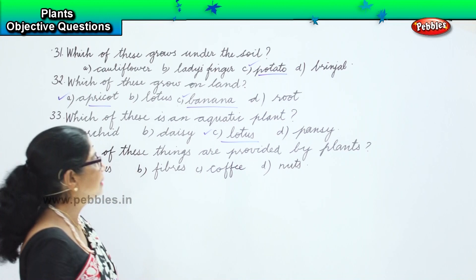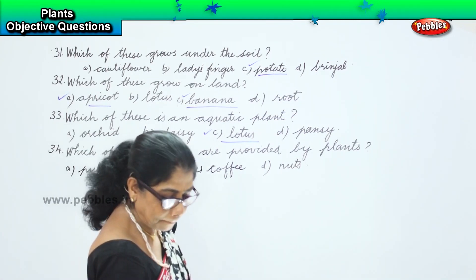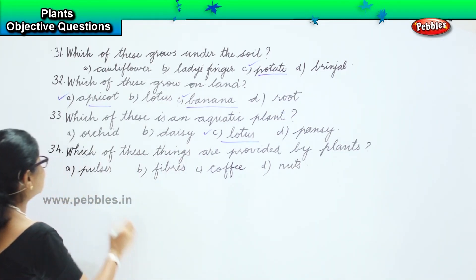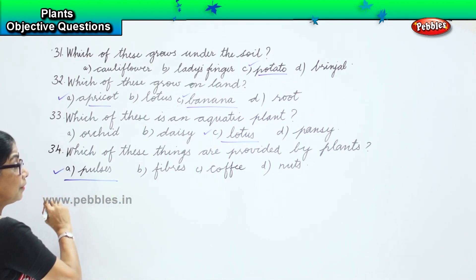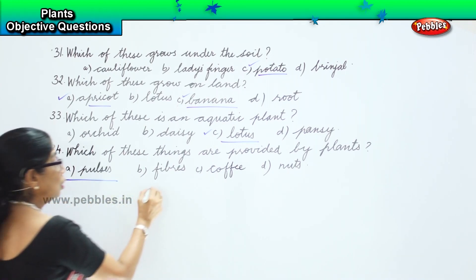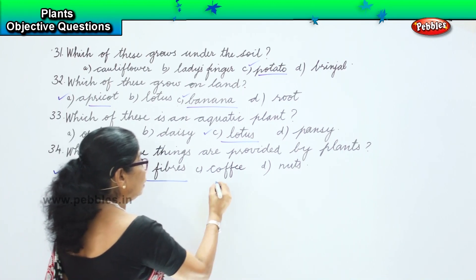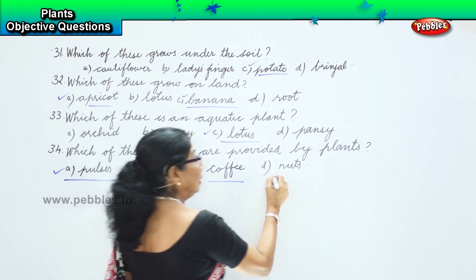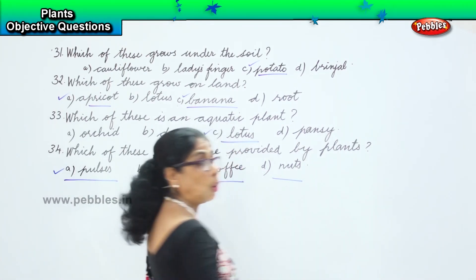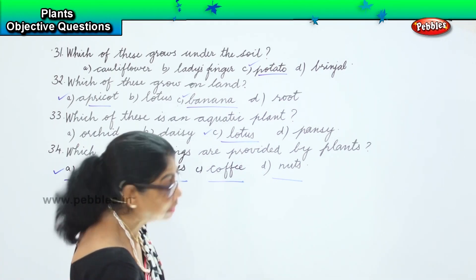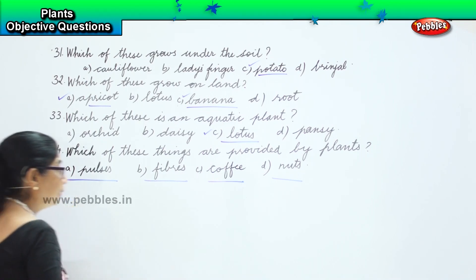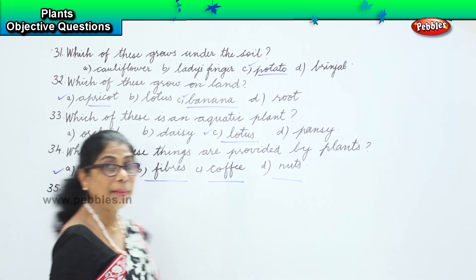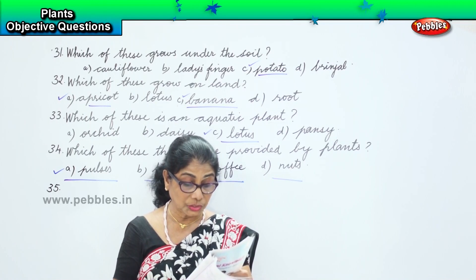Which of these is provided by the plant? All of these. You get pulses from the plant, you get fibers from the plant, you get coffee from the plant, nuts as well — so all of these are provided by the plant: pulses, fibers, coffee, nuts — all.